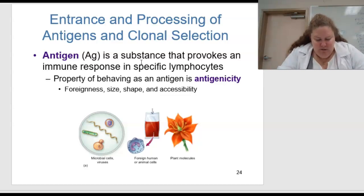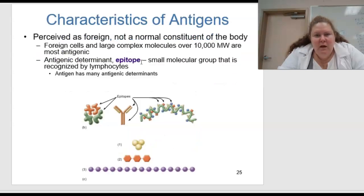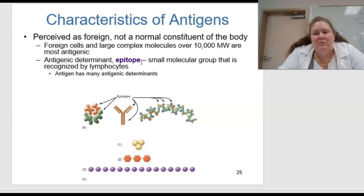This is figure 15.7 — the characteristics of antigens. In A, whole cells of bacteria, fungi, and viruses make good immunogens, and so do plant parts and animal cells. Foreign cells and large complex molecules over 10,000 molecular weight are most antigenic. An antigenic determinant or epitope is a small molecular group recognized by lymphocytes, and the antigen has many antigenic determinants.